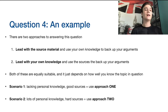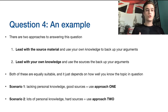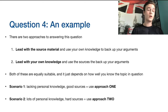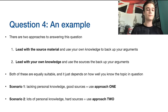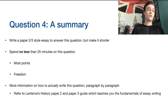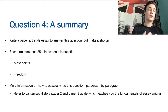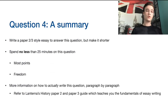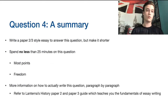In terms of actually writing the essay, we'll be covering that in part three of the history tutorial series where we cover paper two and three. The summary for question four: write a paper two or three style essay but make it shorter. Spend no less than 25 minutes because it's worth the most points and gives you a lot of freedom. For how to structure your introduction all the way through to your conclusion, refer to Lanterna's history paper two and three guide, which teaches the fundamentals of essay writing — we'll be uploading that really soon.